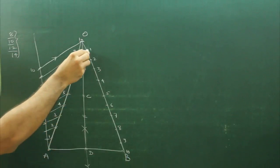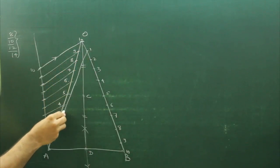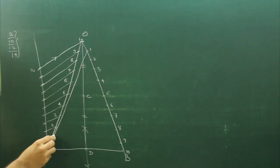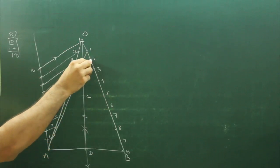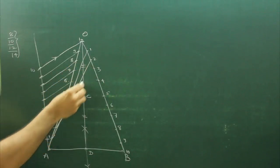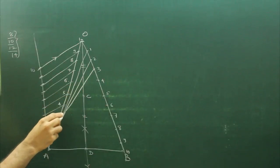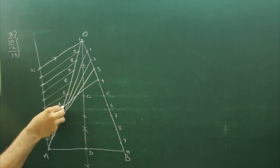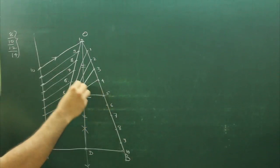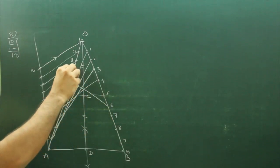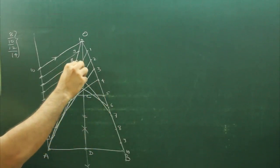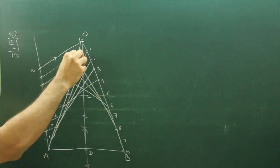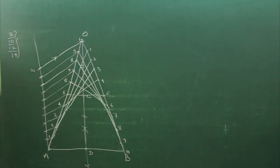After that you join 1 to 1, 2 to 2, 3 to 3, 4 to 4, 5 to 5, 6 to 6, 7 to 7, 8 to 8, 9 to 9, 10 to 10. And you can drop off.